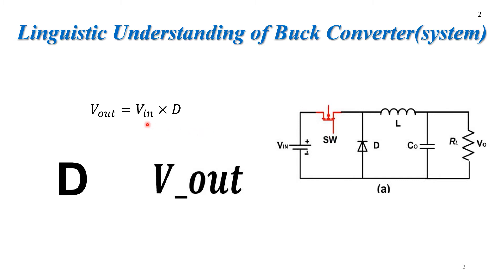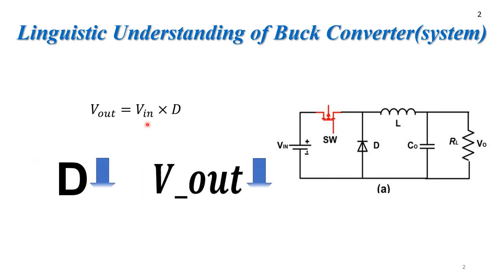We can see clearly that if we increase the duty cycle, the output voltage increases; if we decrease the duty cycle, the output voltage decreases. This is a very simple system — whatever control signal we provide here: